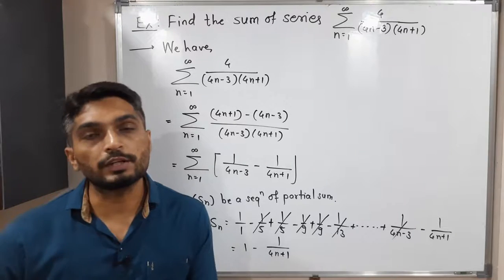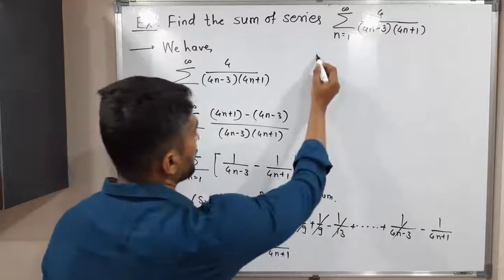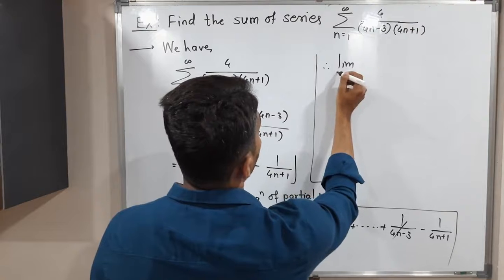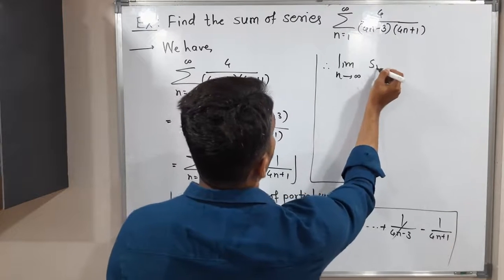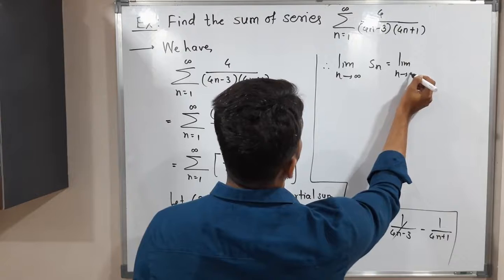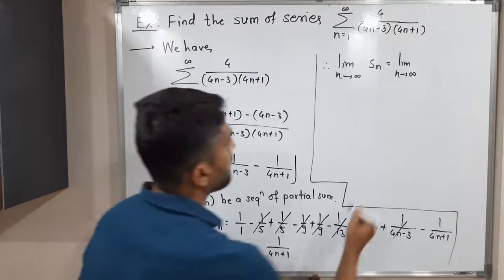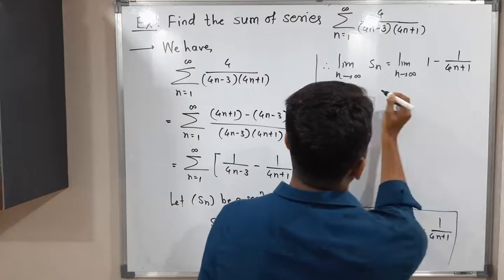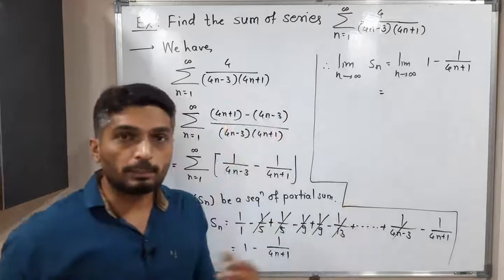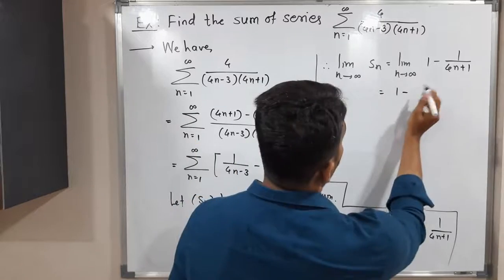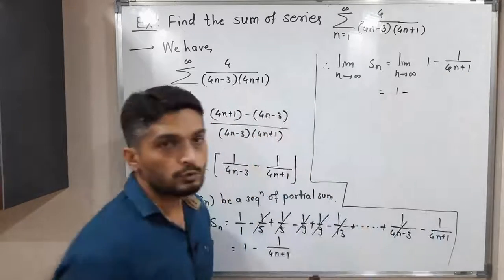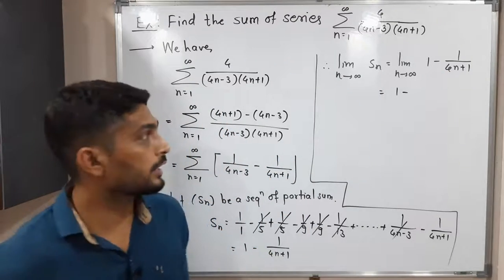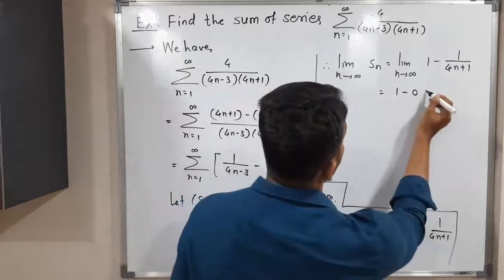Now let us apply the limit as n tends to infinity on both sides. The limit as n tends to infinity of sn equals the limit of 1 minus 1 upon (4n plus 1). Since 1 is constant, it remains 1. As n tends to infinity, 1 upon (4n plus 1) tends to 1 upon infinity, which is 0. So we get 1 minus 0, which is 1.